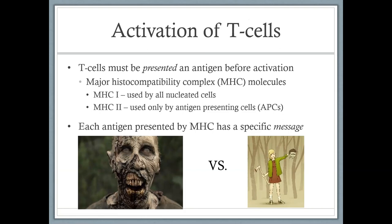MHC-2 molecules are more specialized — they are used only by antigen-presenting cells, known as APCs. Examples include dendritic cells found in the skin and certain types of macrophages. These have MHC-2, but since they're nucleated they also have MHC-1 molecules. The take-home message: if you are a nucleated cell, you have MHC-1. If you are an antigen-presenting cell, you have MHC-2. MHC-2 is just more specialized.